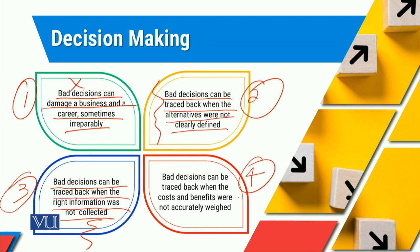The fourth phenomenon which we have to understand is that bad decisions can be traced back when the costs and benefits were not accurately weighed. Jab hum cost versus benefit analysis na kar paein, jab hum cheezon ko evaluate na kar sakein in terms of their opportunity cost and opportunity loss, jab hum yeh baat na jaan paein ke hamara fayda kis cheez mein hai, to obviously us surat mein the bad decision is the outcome, bad decision is the result.